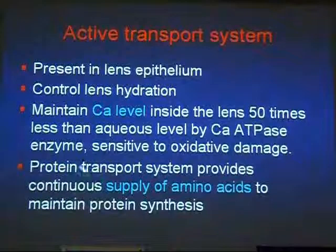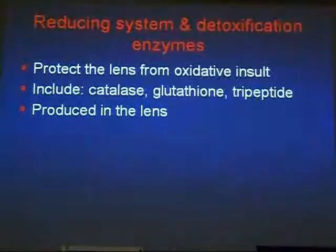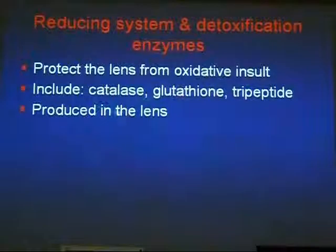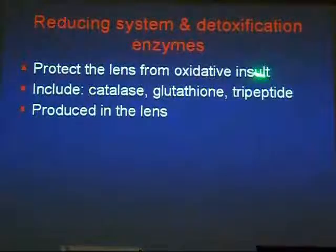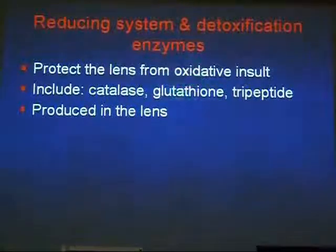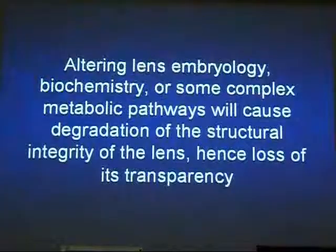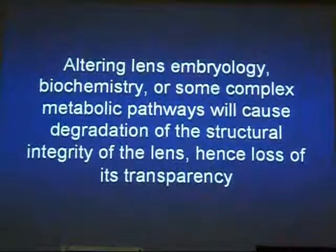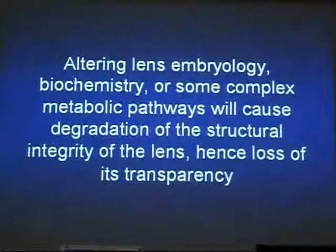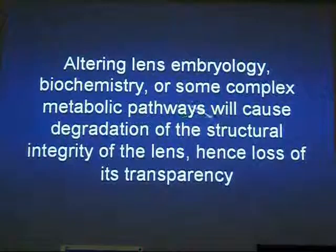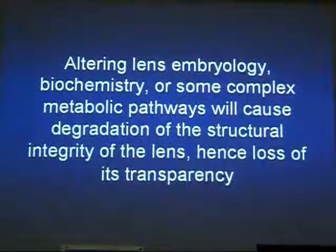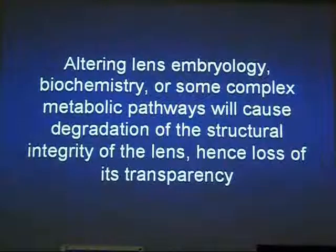Anything that interferes with the protein transport system may lead to cataract. We also have reducing systems and detoxification enzymes like catalase, glutathione, and superoxide dismutase produced inside the lens — any damage to these enzymes, such as from oxidative damage caused by certain diseases, may lead to cataract. Concerning the pathogenesis of pediatric cataract, it is quite unknown, with many theories. Altering embryology, biochemistry, or other complex pathways will cause degradation of the structure and integrity of the lens and hence loss of transparency.